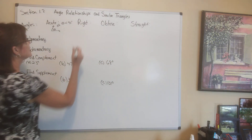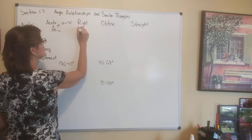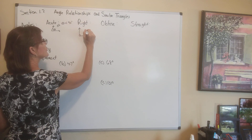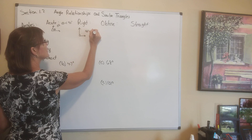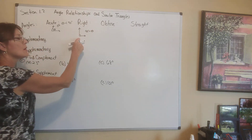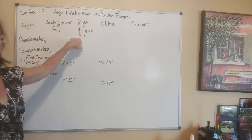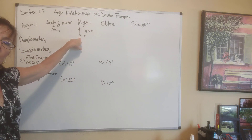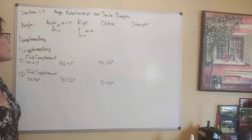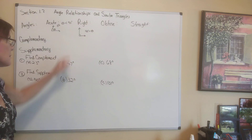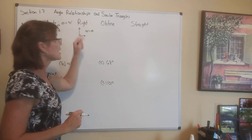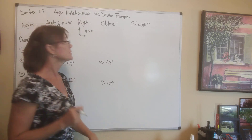An angle that is 90 degrees is a right angle — I'm sure that you are familiar with that. Lots of times, right angles are indicated by a little box right there where they meet at the vertex. They are perpendicular — perpendicular lines meet at right angles.